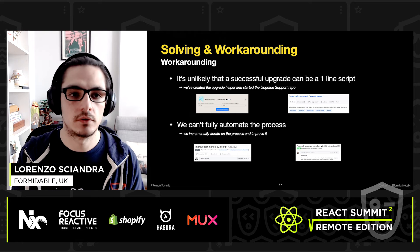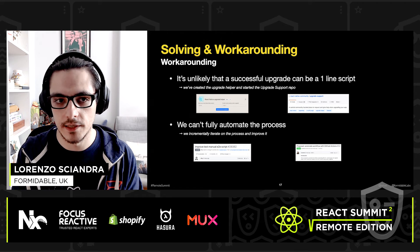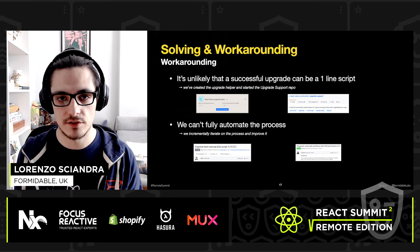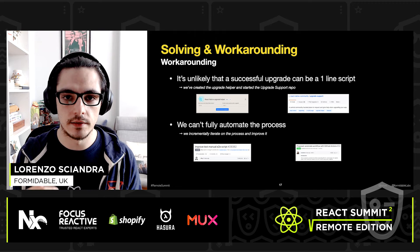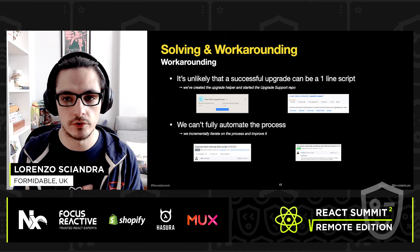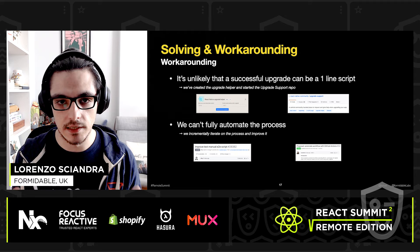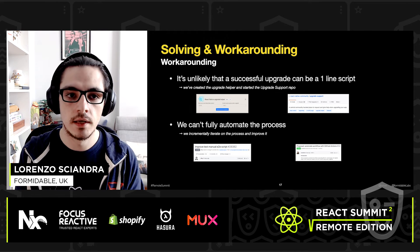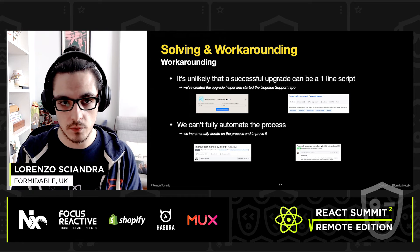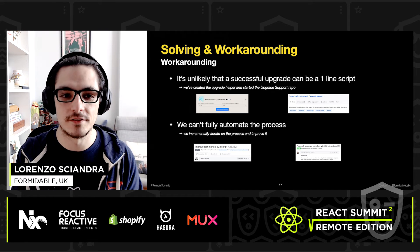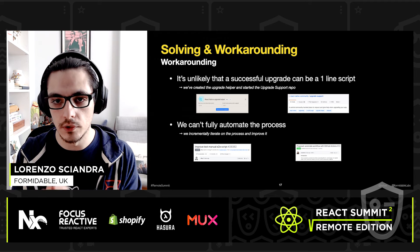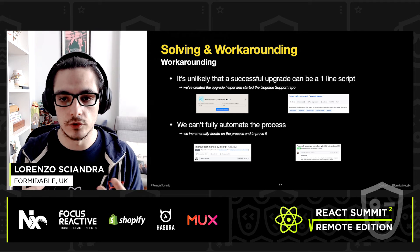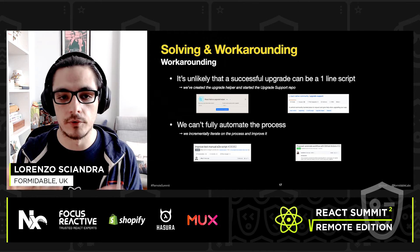Talking about working around what we can't fully solve: we're quite sure it will never get to the point where upgrading is a one-line script. There have been a couple of CLI attempts over the years, but in our experience they never fully support or leave your codebase clean after being run. That's why we created Upgrade Helper — a web app — and the new upgrade support repo, both ways for the community to help each other upgrade from one version to another.